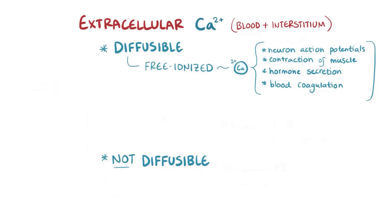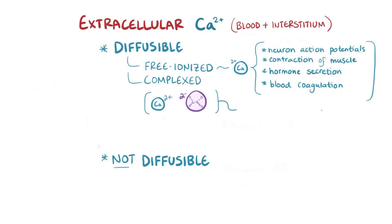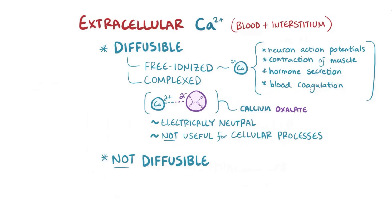...as well as hormone secretion and blood coagulation, all of which are tightly regulated by enzymes and hormones. The other category is complex calcium, where the positively charged calcium is ionically linked to tiny negatively charged molecules like oxalate, a small anion normally found in our blood in small amounts. The complex calcium forms a molecule that's electrically neutral, but unlike free ionized calcium, it's not useful for cellular processes.